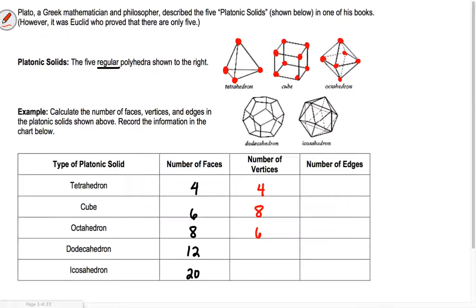For the dodecahedron: five along the top (pentagon shape), ten along the middle — fifteen — and five along the bottom, giving twenty vertices total. For the icosahedron: one on top, five along the upper middle, five along the lower middle, and one on the bottom — twelve vertices total, though it's a little hard to count.